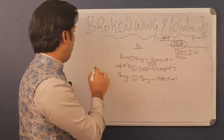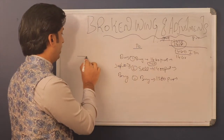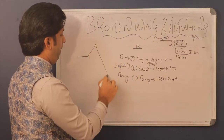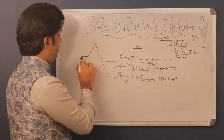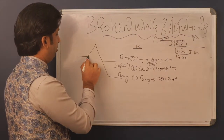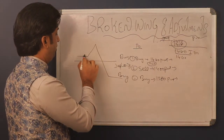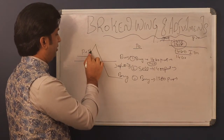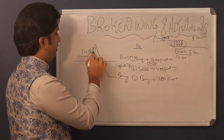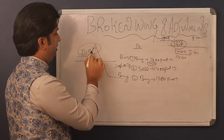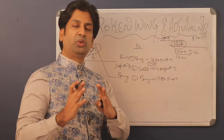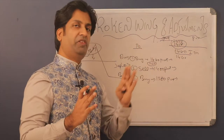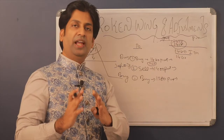This is how the put-side payoff graph looks — the wing is broken, and you have profits in this area. Now I will show you how to construct the broken wing butterfly and do the adjustments.